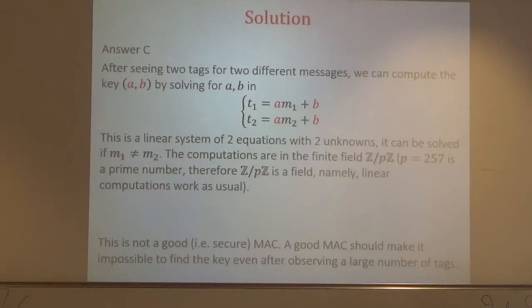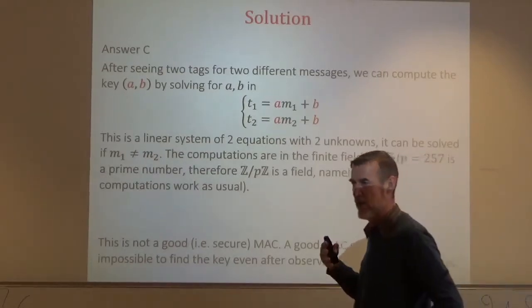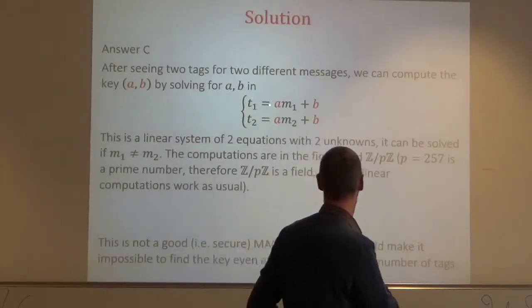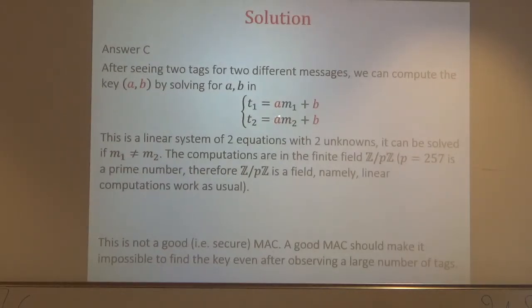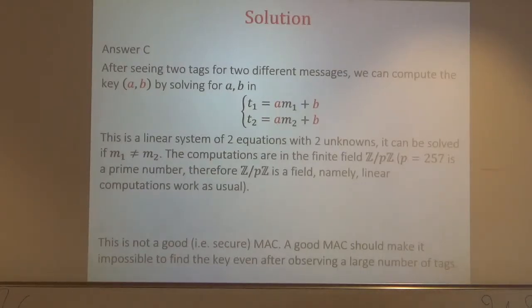The system is linear in the sense of number theory, and since P is prime, it behaves like standard real-number arithmetic. So if M1 ≠ M2 — if you've seen two tags for two different messages — you can compute the key. A good MAC must make it impossible to create a valid tag even if you observe a large number of messages.